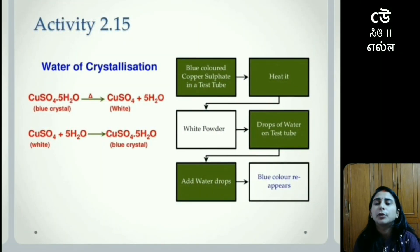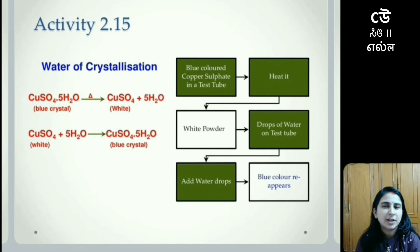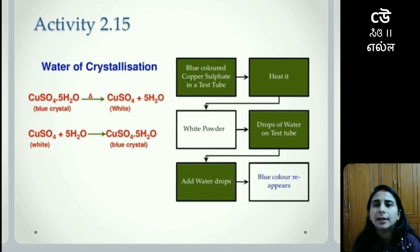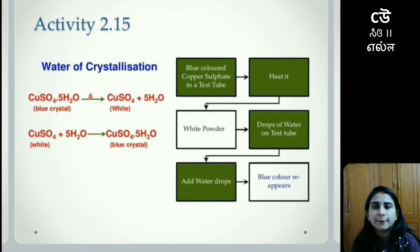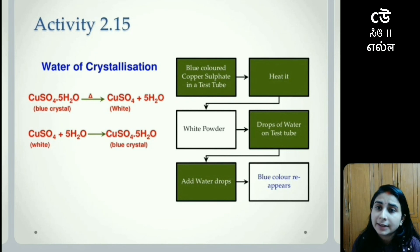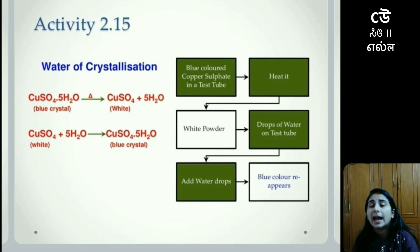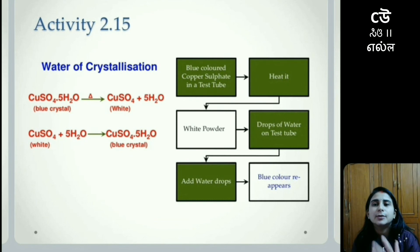Activity 2.15, which is the last activity of this chapter, is about water of crystallization. Copper sulfate with five molecules of water — CuSO₄·5H₂O — when heated, decomposes to form anhydrous copper sulfate and water. The hydrated copper sulfate is bluish in color, but anhydrous copper sulfate is white. The reverse happens when anhydrous copper sulfate is combined with five molecules of water — it becomes hydrated copper sulfate with blue colored crystals.